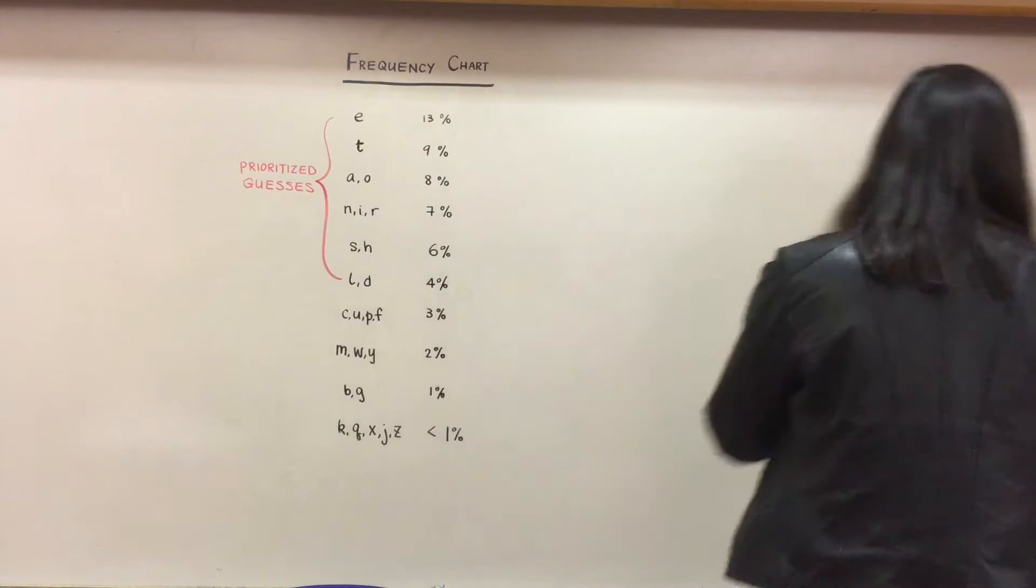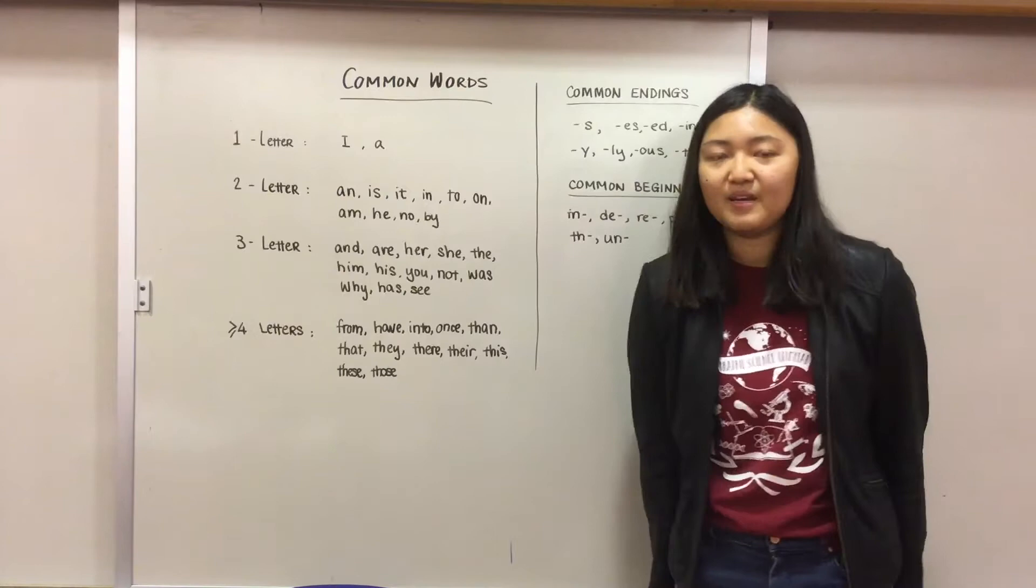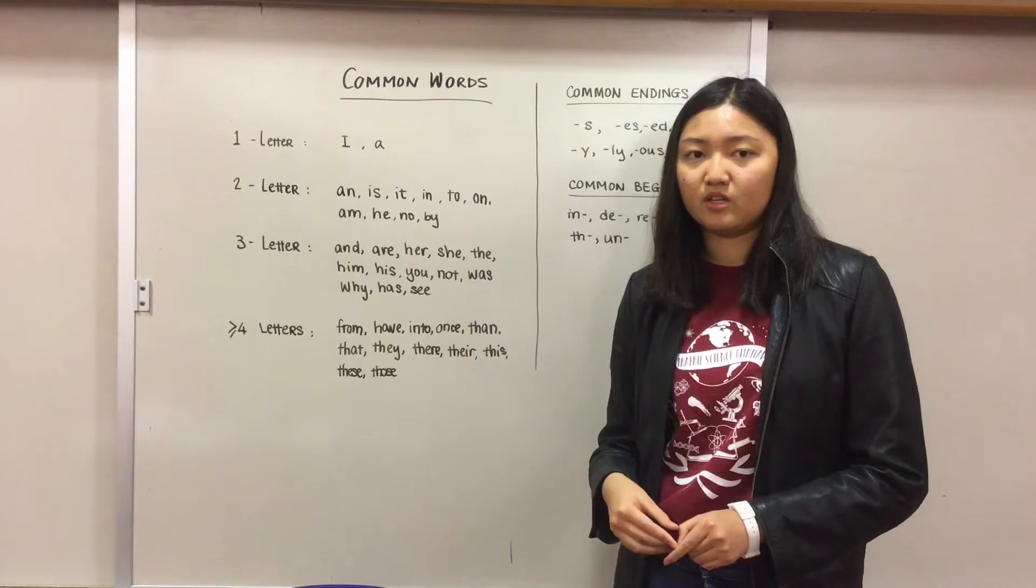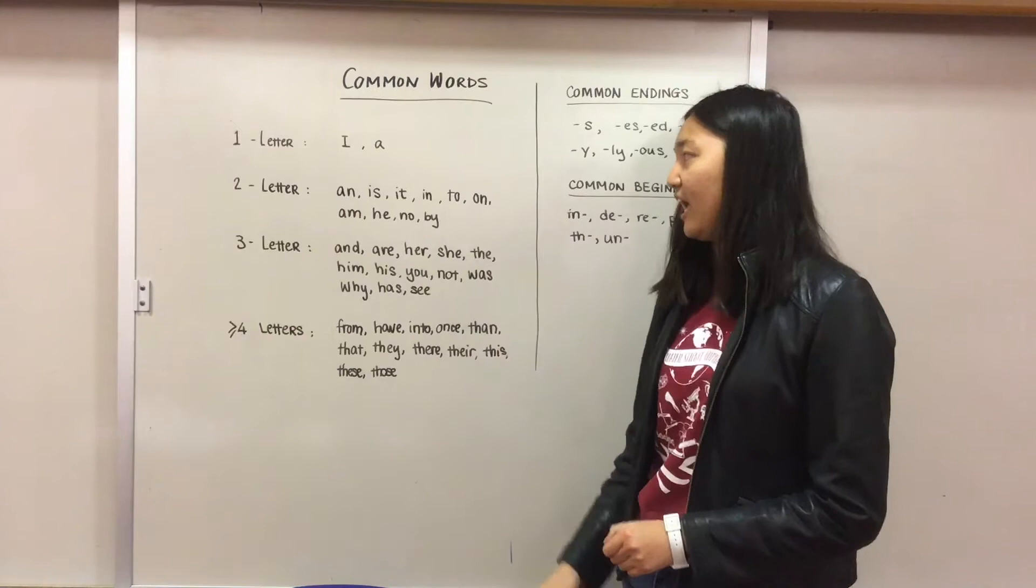And then we are going to move on to some common words and common endings and beginnings of the word to help you through the decryption process. So I and A are the two only one-letter words, so that can limit down your guesses.